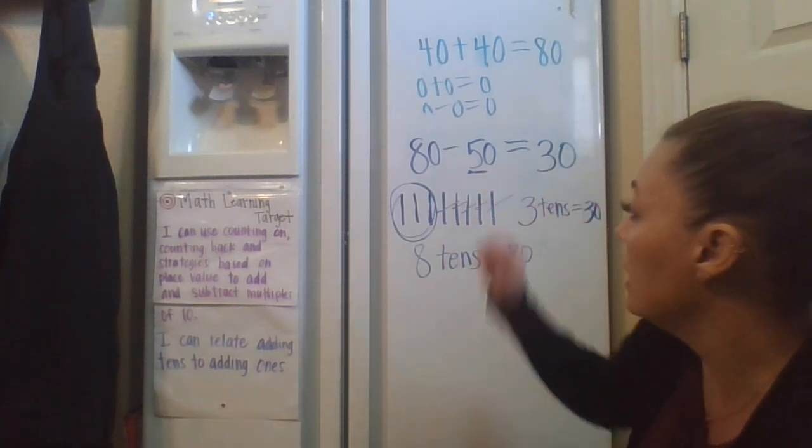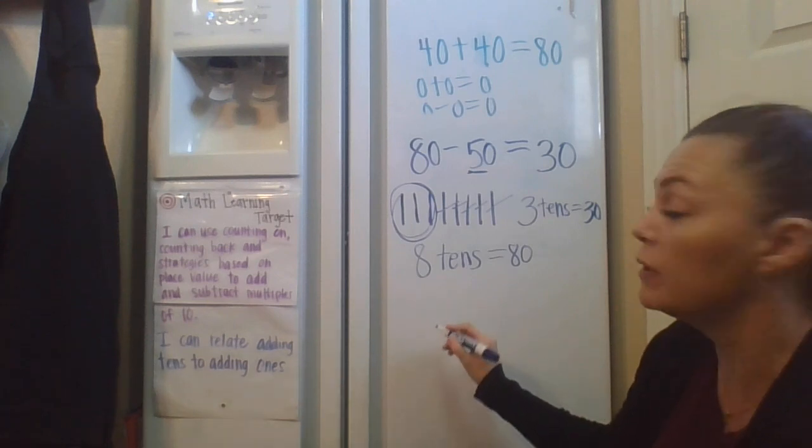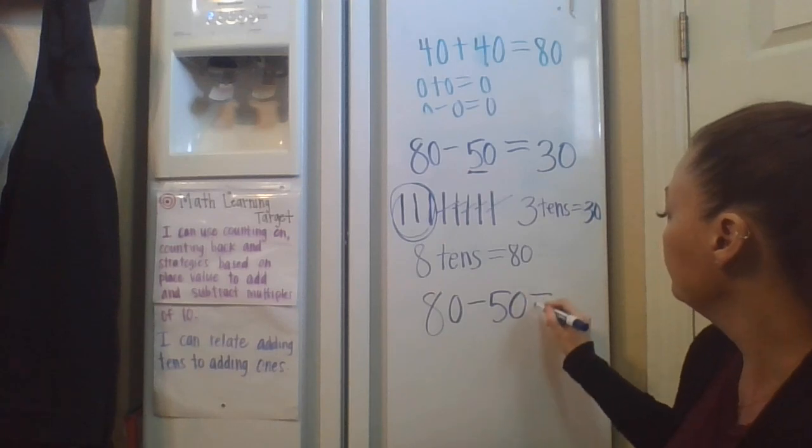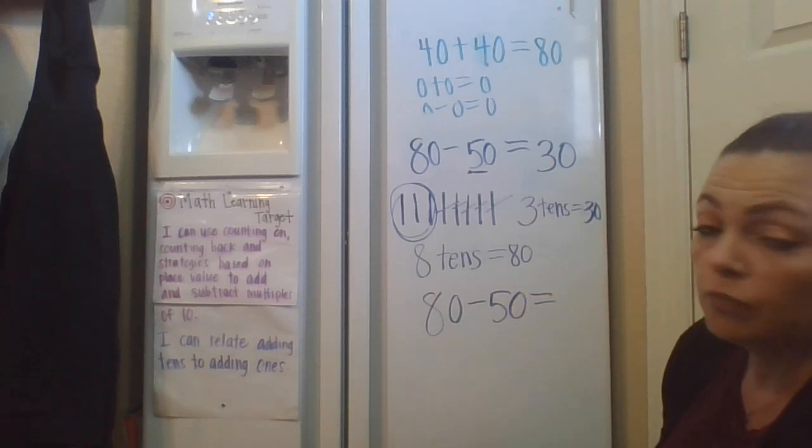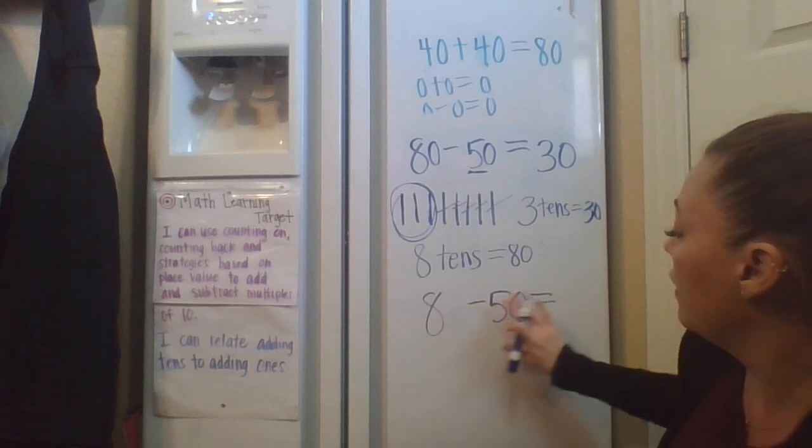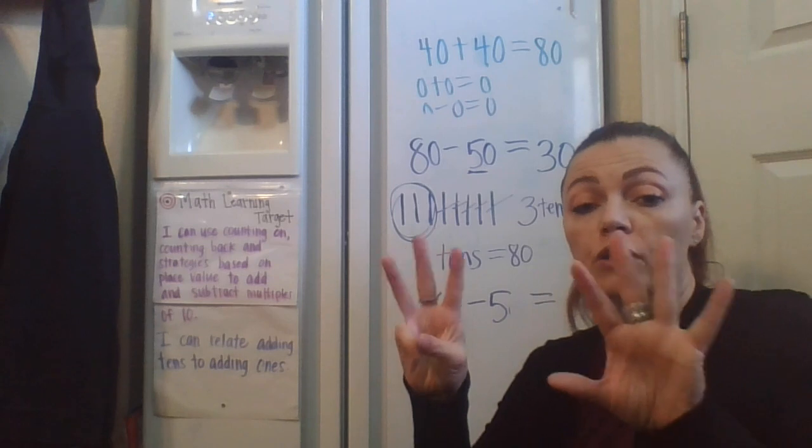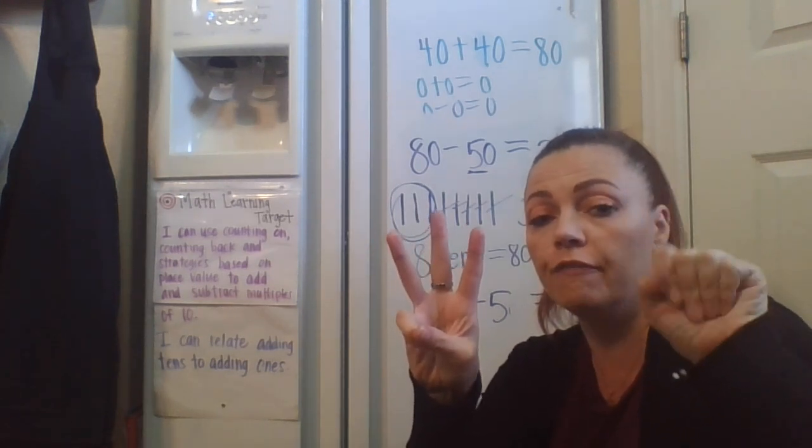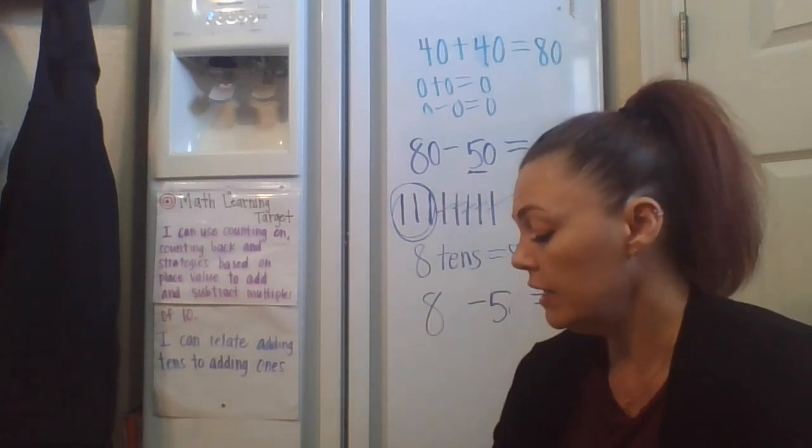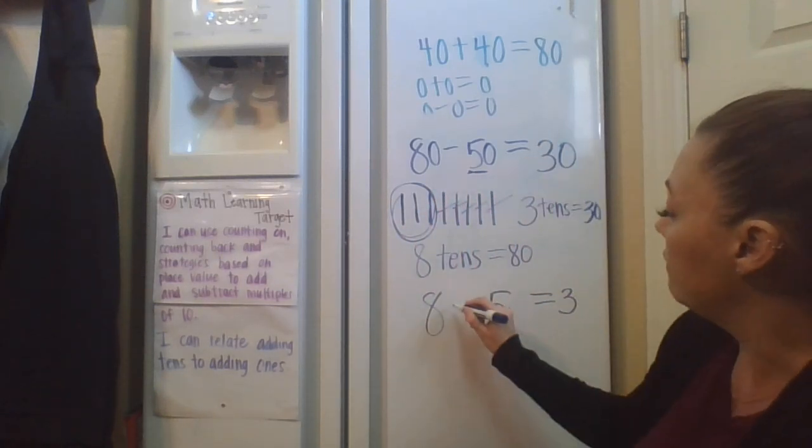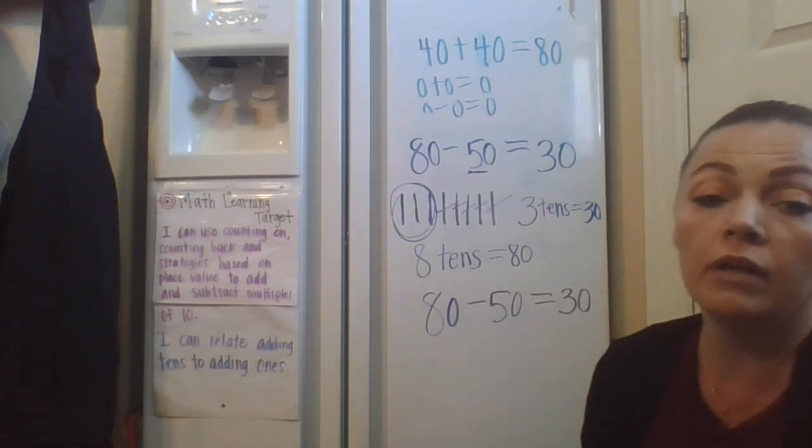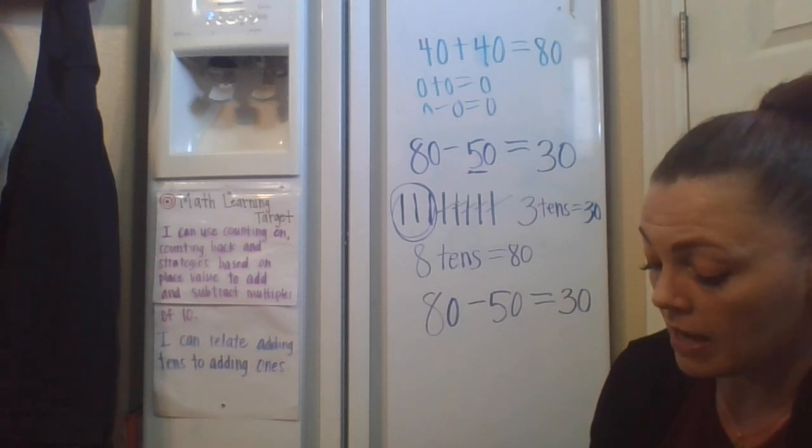Another way to look at it again is just by using those first numbers. So if I had that same problem, 80 minus 50. Let's start by just ignoring those zeros. So they're there, they're just ghost zeros. 8 minus 5. Well, you can use your fingers or you may know how to do it. But if I have 8 and I subtract 1, 2, 3, 4, 5, I have 3 left over. Because 8 minus 5 is 3. And 0 minus 0 is 0. So we come up with the same answer both ways.